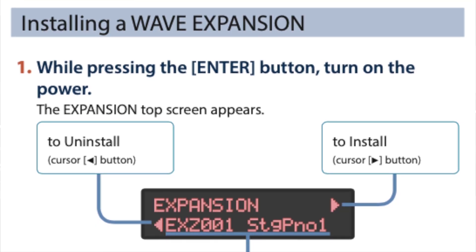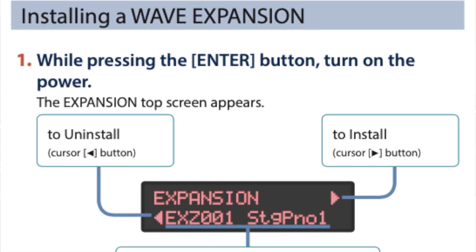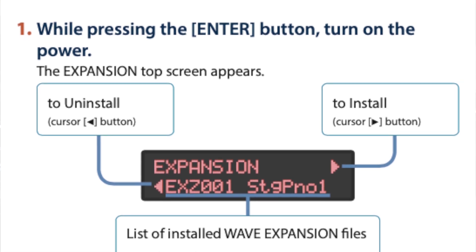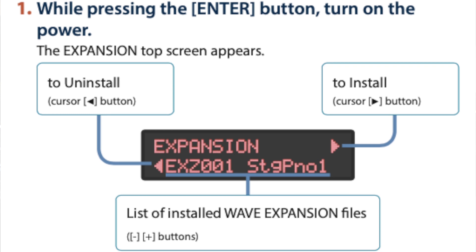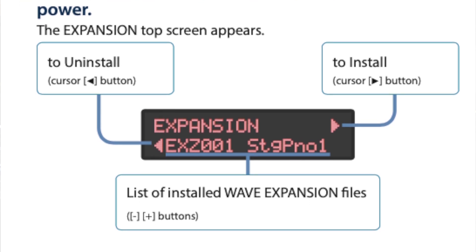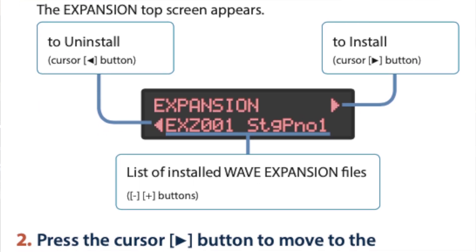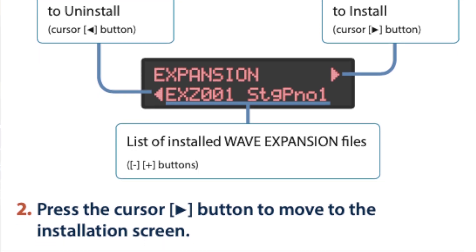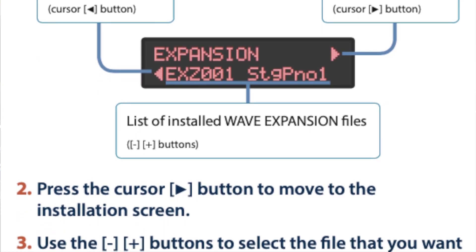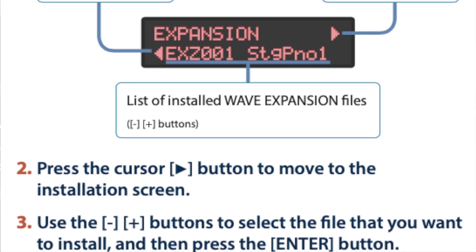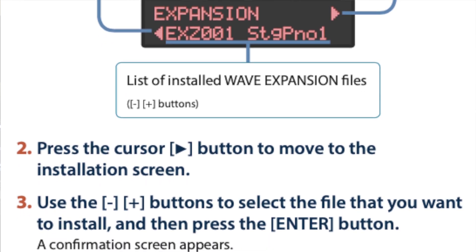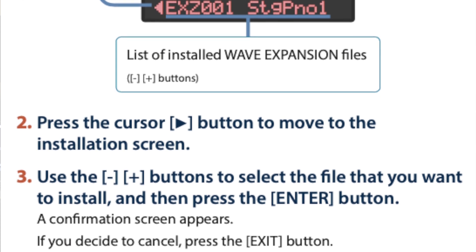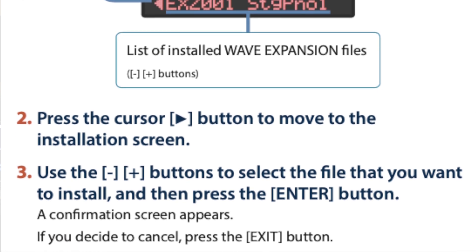To install a wave expansion, hold down the enter button and turn on the power. The expansion screen appears. To uninstall an installed expansion, press the left cursor button. To install, press right. Press the right cursor button to move to the installation screen. Use the minus and plus buttons to select the file that you want to install and press enter. A confirmation screen appears, and if you decide to cancel, you can exit out of there.